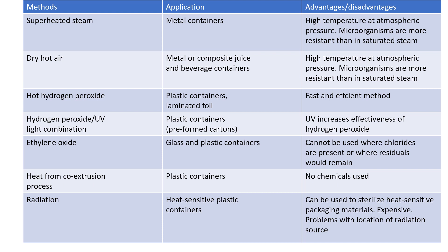Another method of sterilization is gaseous sterilization, also known as ethylene oxide gas. It is preferred for packaging containers like glass and other plastic containers which cannot be used where chlorides are present or where residuals would remain. Another preferred treatment for plastic containers is heat from the co-extrusion process, since it utilizes no chemicals. Another method for heat-sensitive plastic containers is radiation technology, though it is very expensive and there are problems associated with the location of the radiation source.